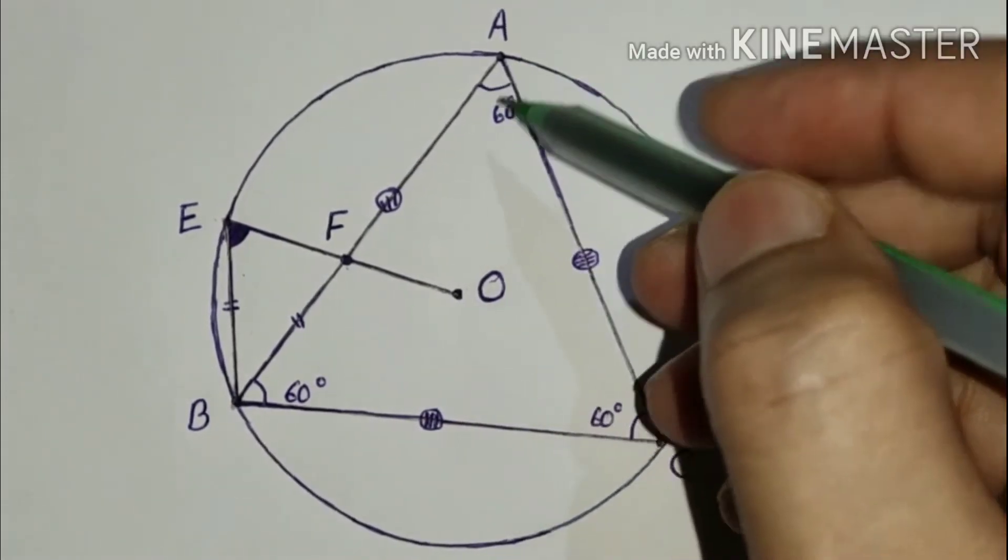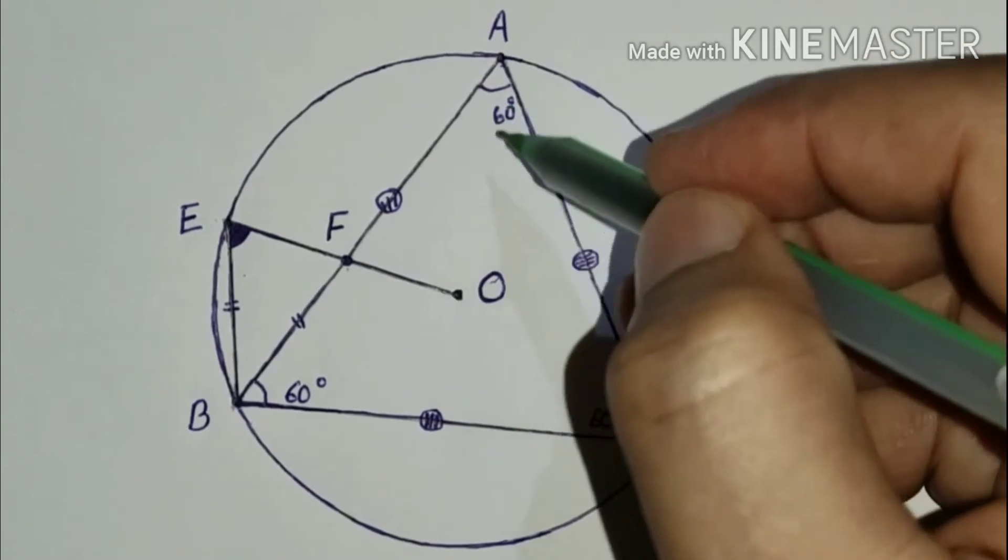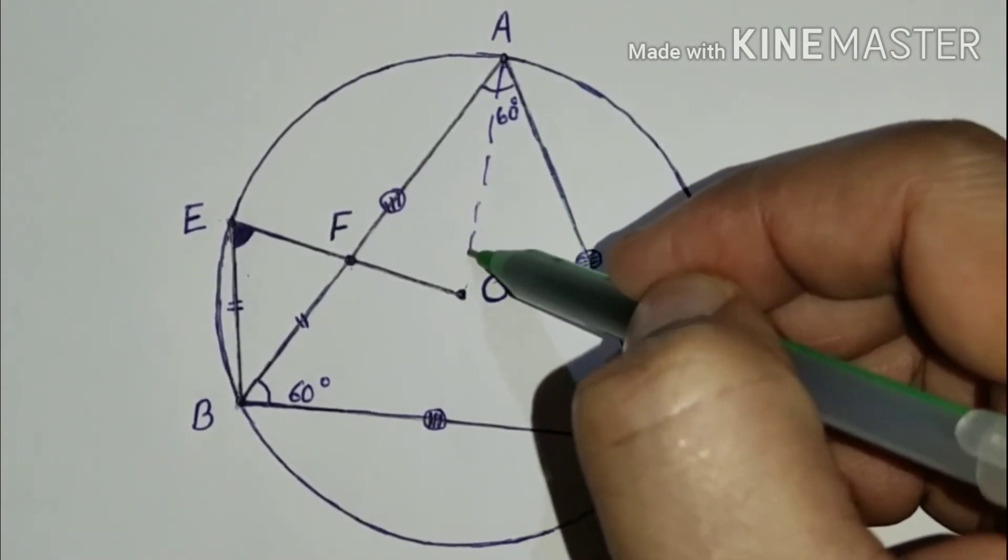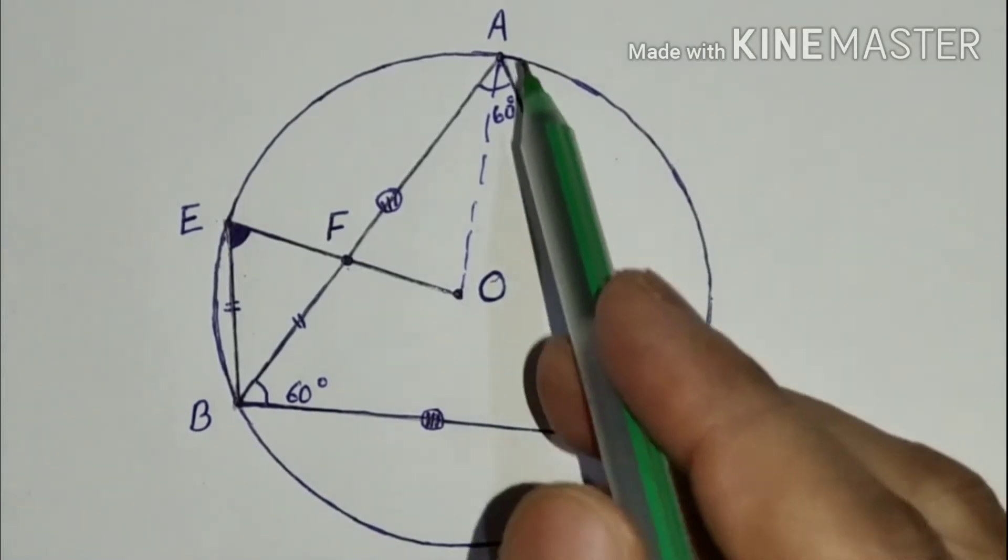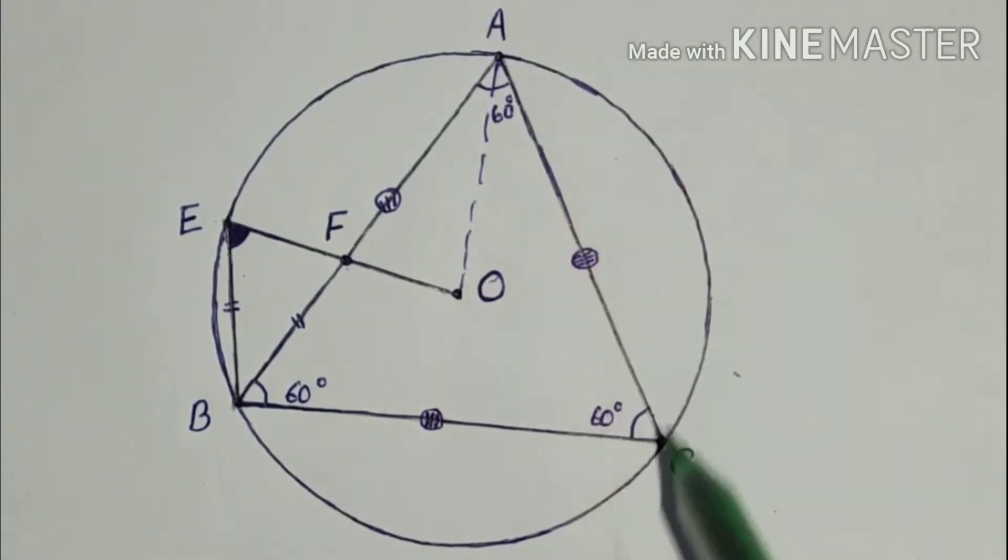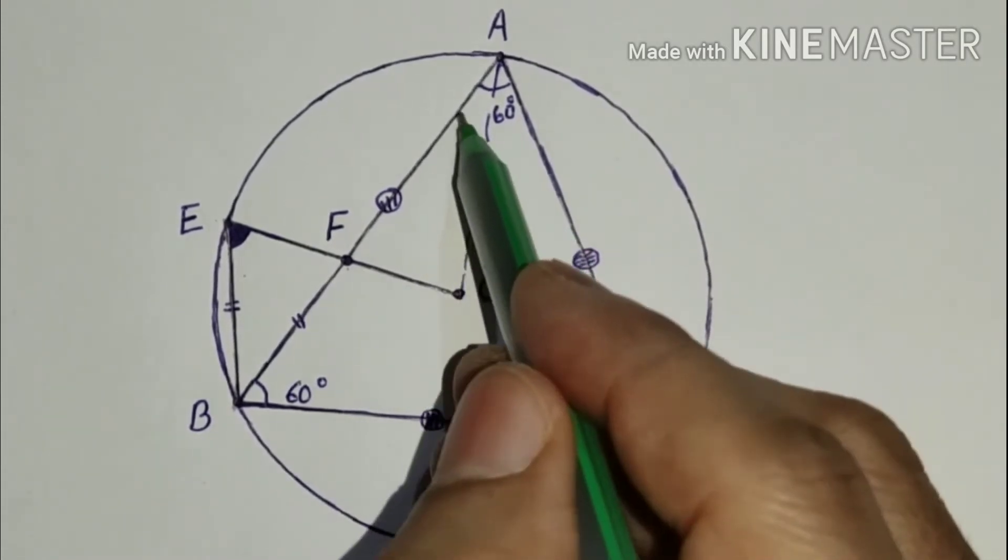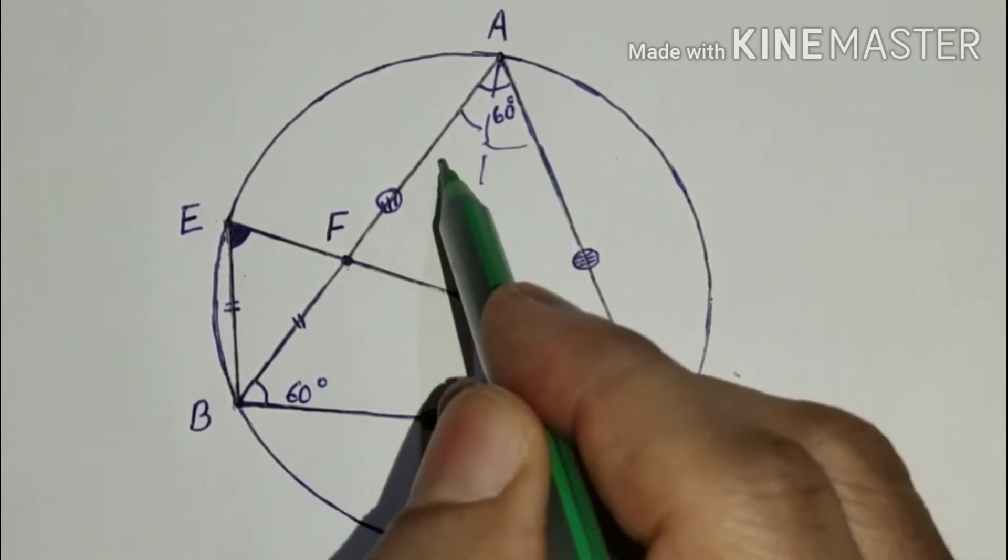So if we join AO, AO will be angle bisector of BAC since O is the circumcenter. So this is equal to this, and this is 30.